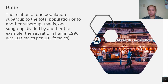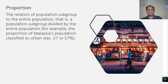Ratio — the relation of one population subgroup to another subgroup; that is, one subgroup divided by another. For example, the sex ratio in Iran in 1996 was 103 males per 100 females. Proportion — the relation of a population subgroup to the entire population; that is, a subgroup divided by the entire population. For example, the proportion of Malaysia's population classified as urban was 0.75, or 75 percent.